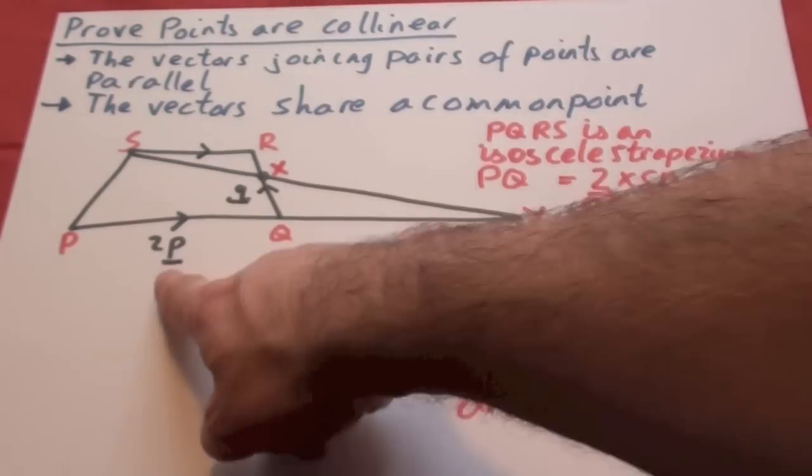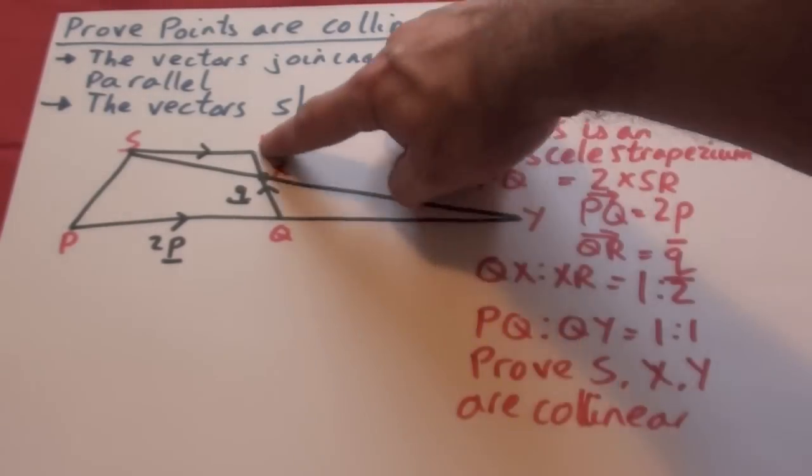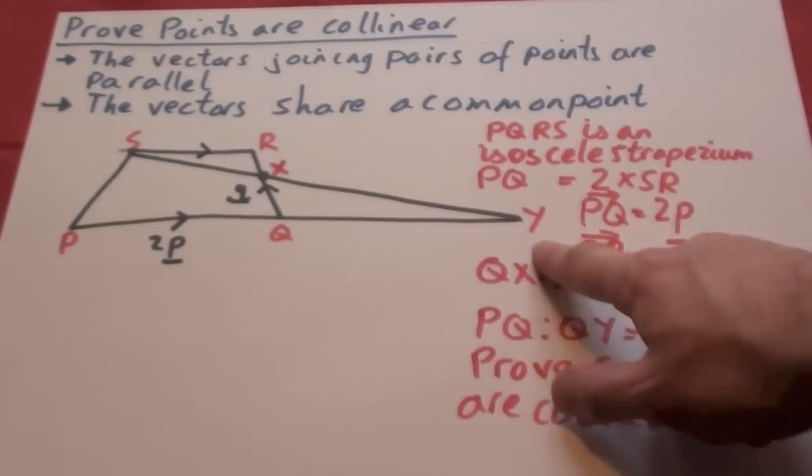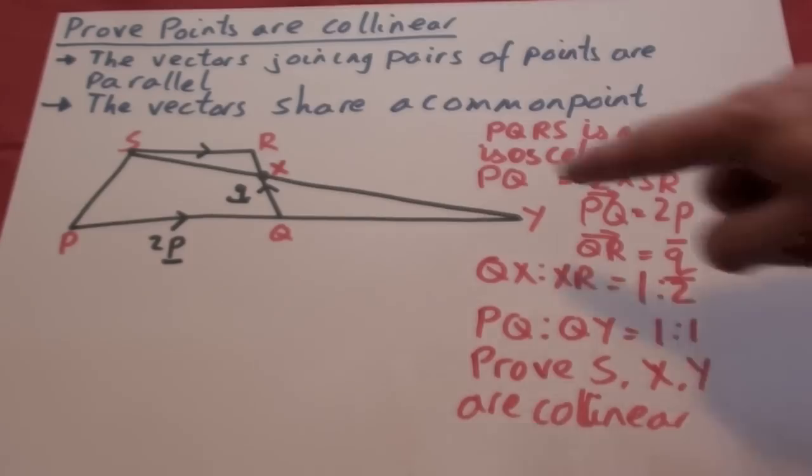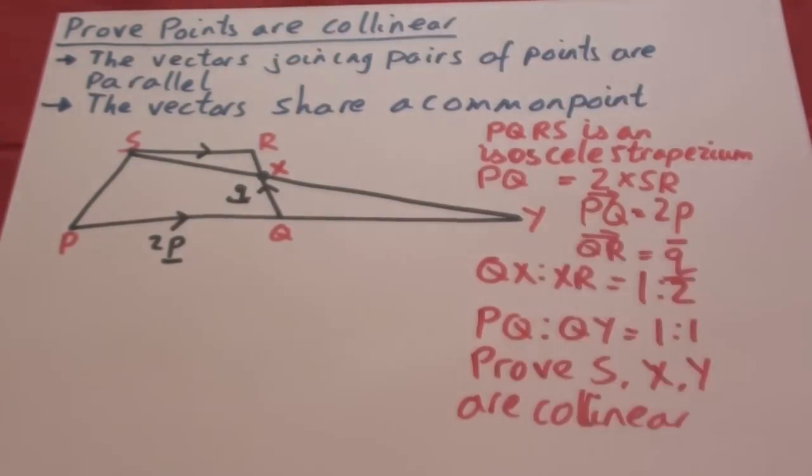So we're going to work this out that PQRS is of an isosceles trapezium. XQ to XR is in the ratio of 1 to 2. PQ to QY is in the ratio of 1 to 1. We've got to prove that S, X and Y all lie on the same line. They're collinear.